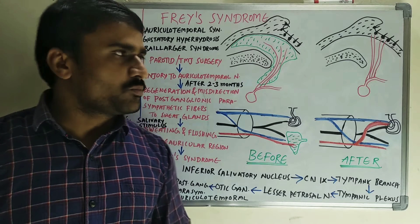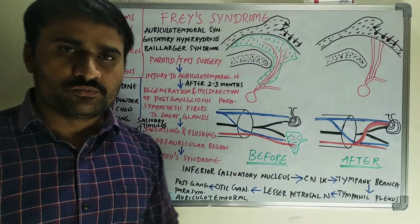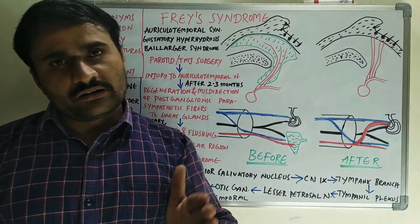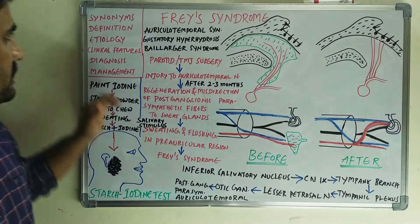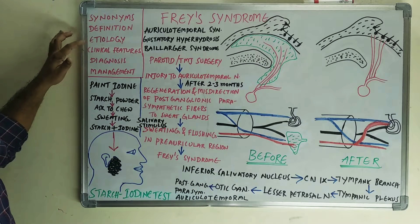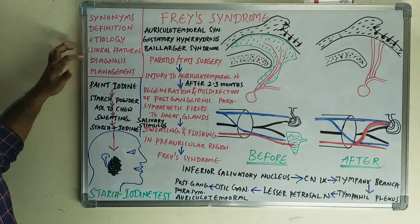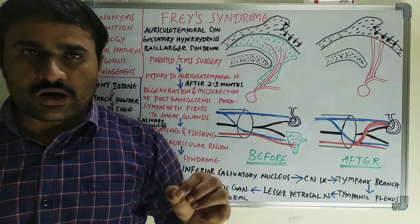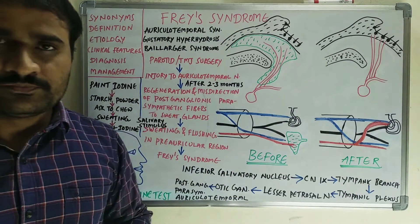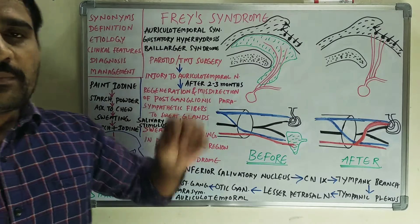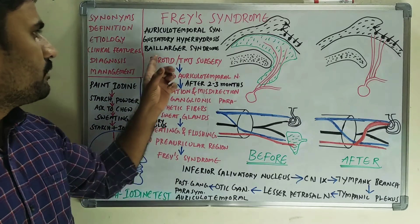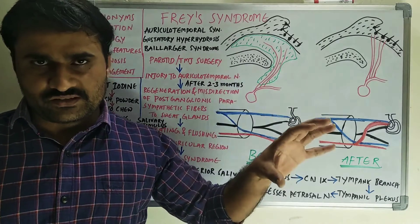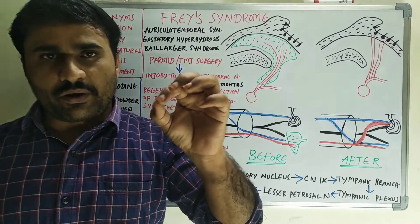In this video we will discuss Frey's syndrome, an important short answer question in surgery and oral medicine. You have to write synonyms, definition, etiology, clinical features, diagnosis and management. Frey's syndrome is also called auriculotemporal syndrome, gustatory hyperhidrosis, and Baillarger syndrome.